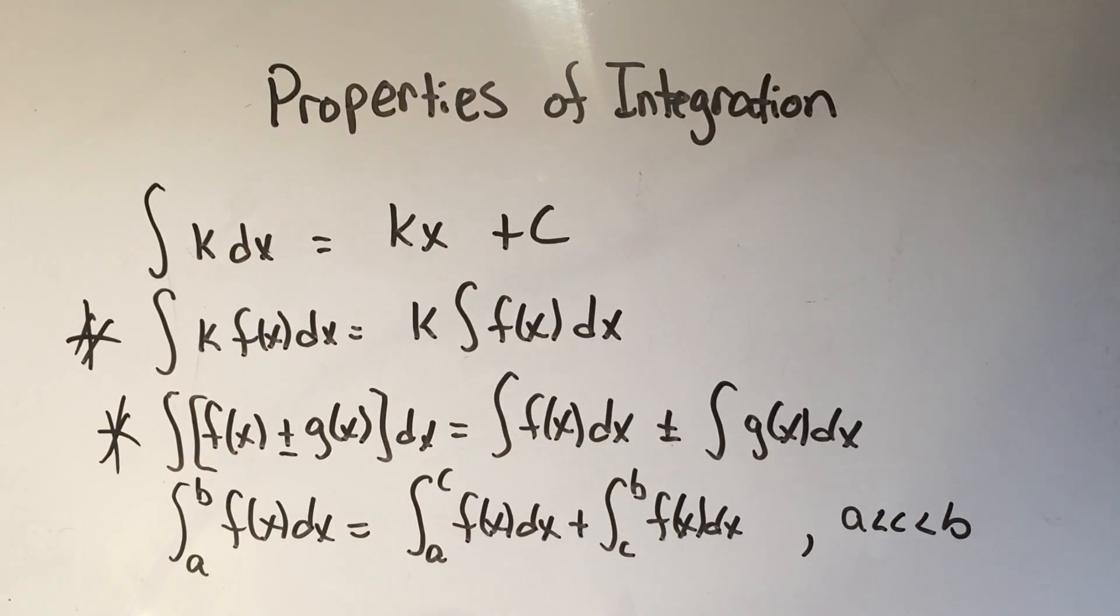And this one doesn't come up so often, but you might use it, especially if you're integrating absolute values. It says if you're integrating from a to b of f of x, you can split up this integral at c as long as c is in between a and b. So if you're integrating from a to b, you can integrate from a to c, and then integrate from c to b. You can split this up into two different integrals, and it's still going over the whole domain.